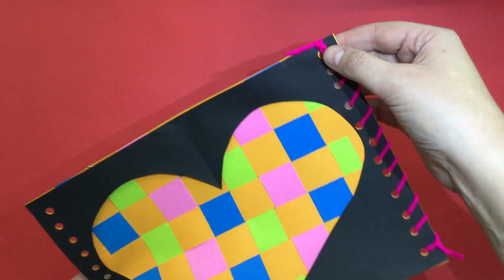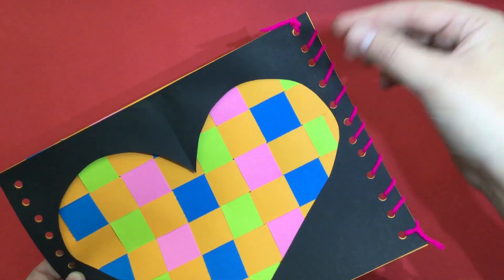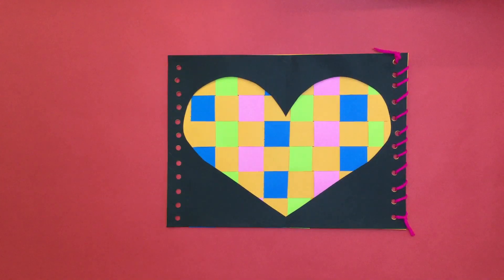Now today we need to bind the edge by doing some stitching through these holes with yarn. Let me show you how we're going to get started with that.